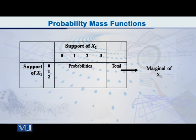In the first column of that table, you have the numerical values of the first variable, and in the top row of that table, you have the numerical values of the other discrete random variable. In the body of the table, you have all the probabilities for all those combinations of values of the first variable and the second variable, and the sum of all those is equal to 1.